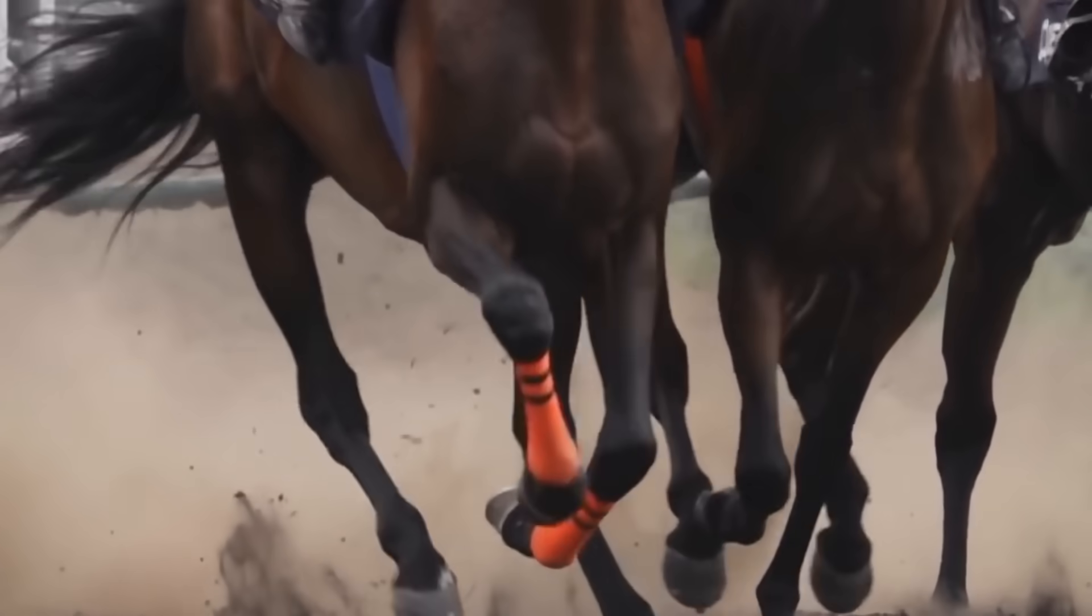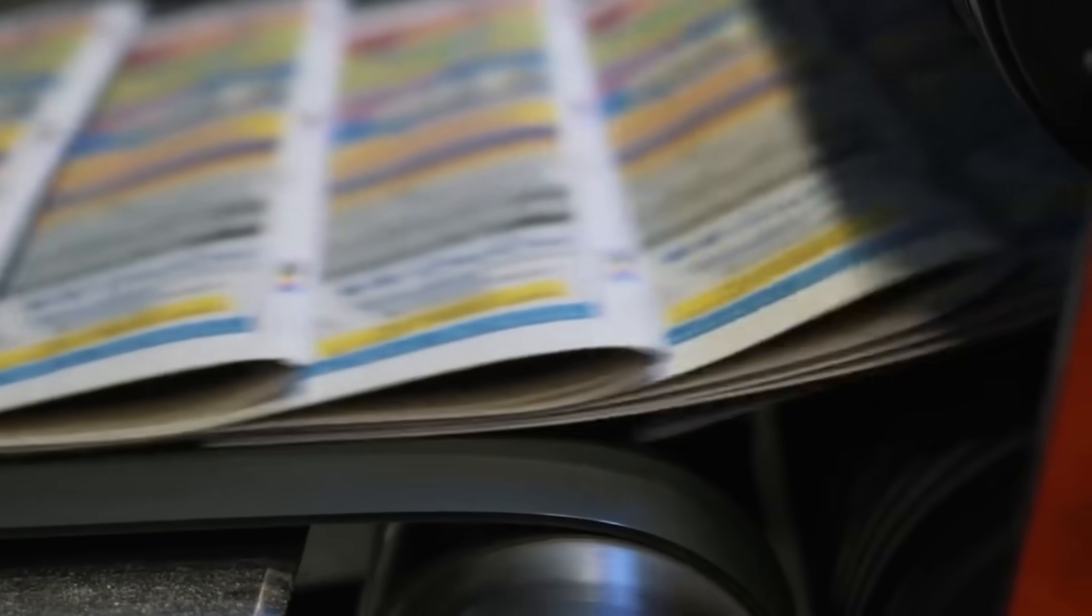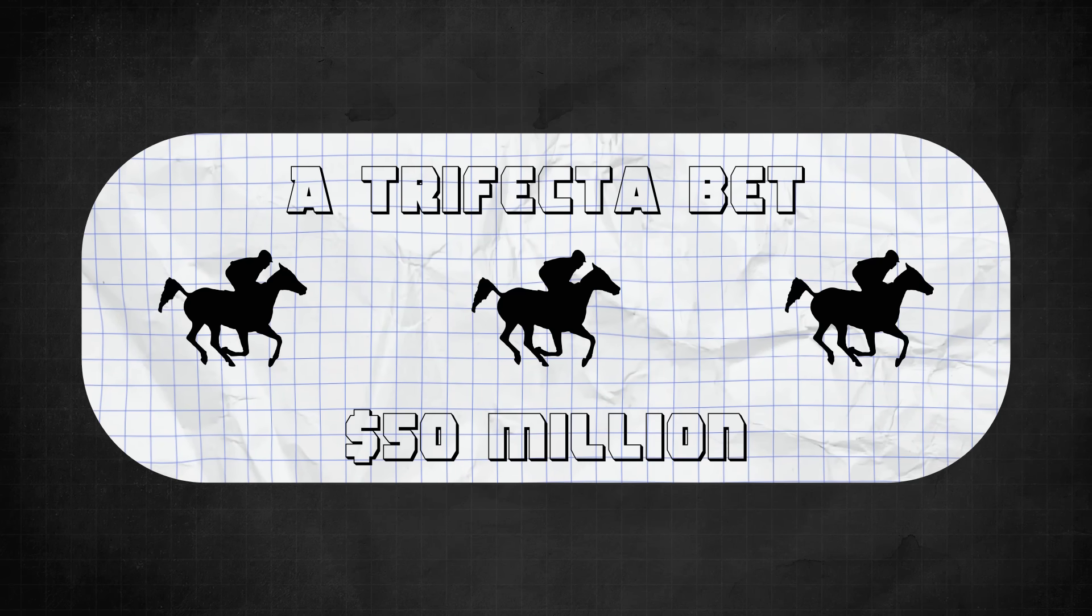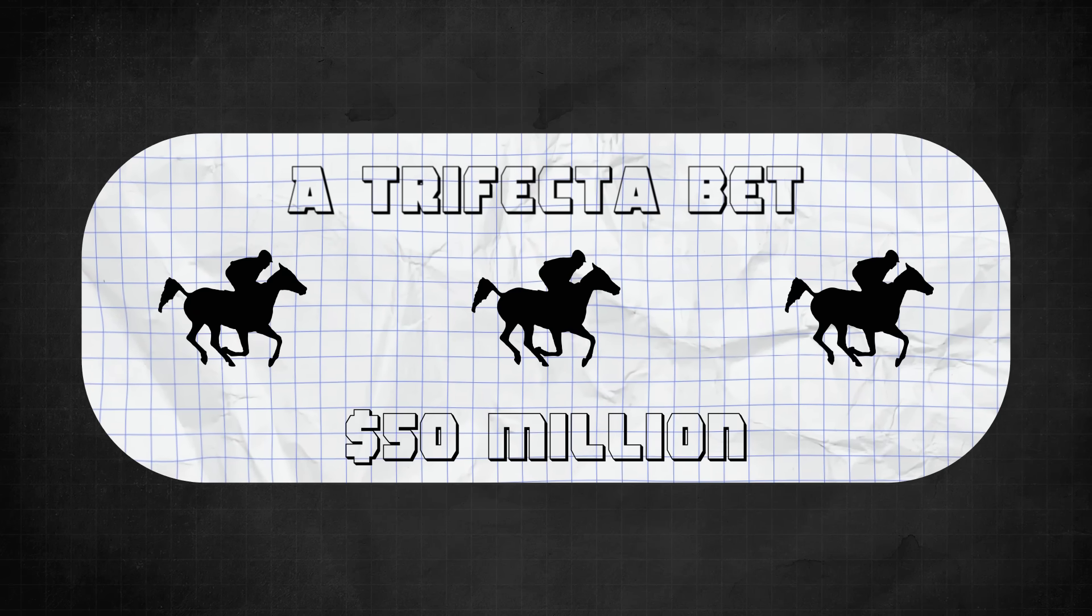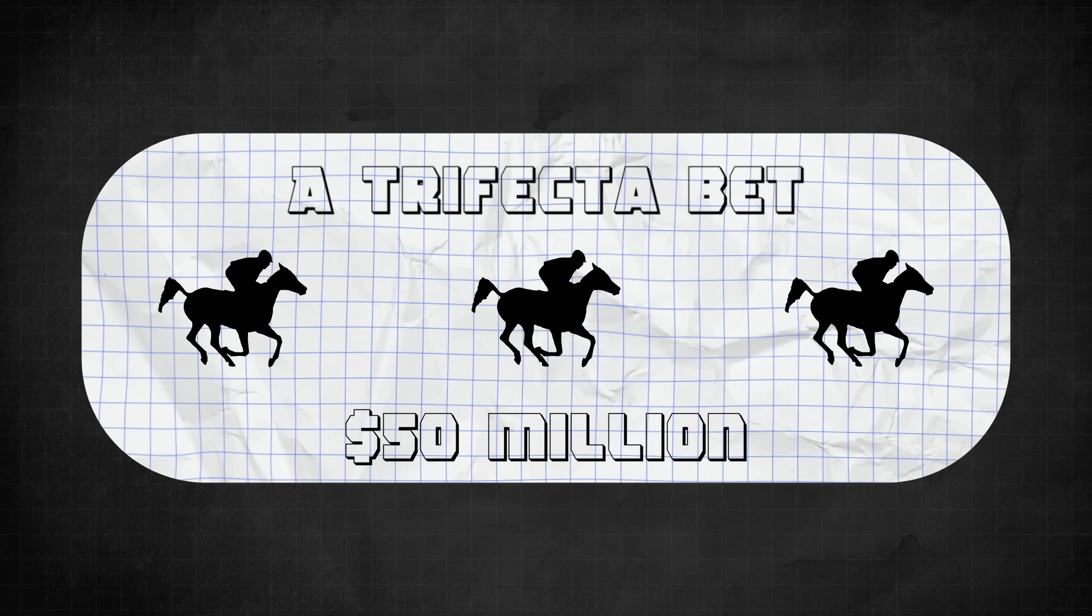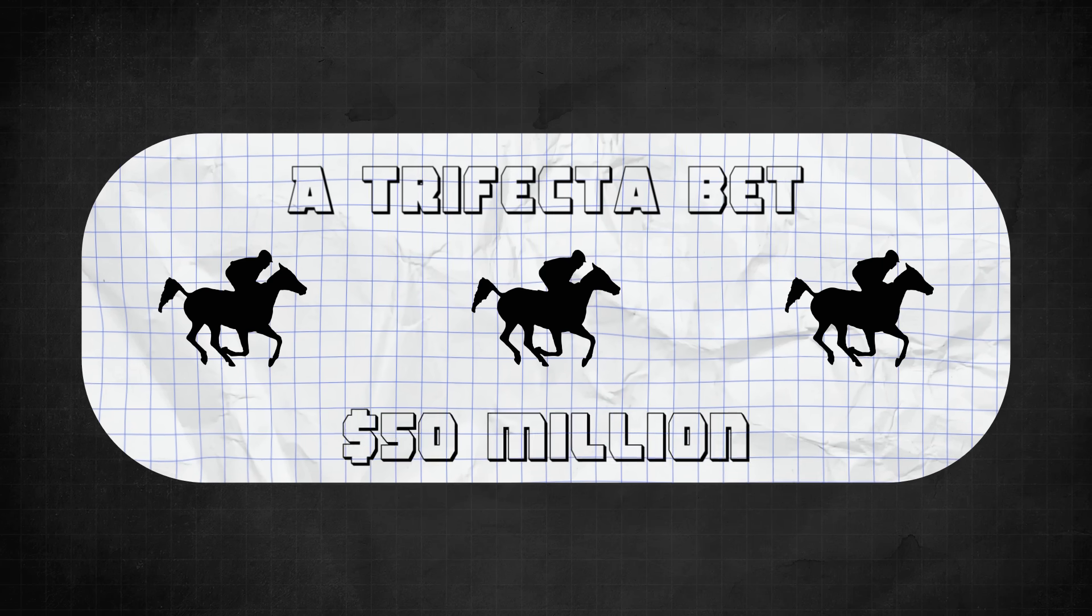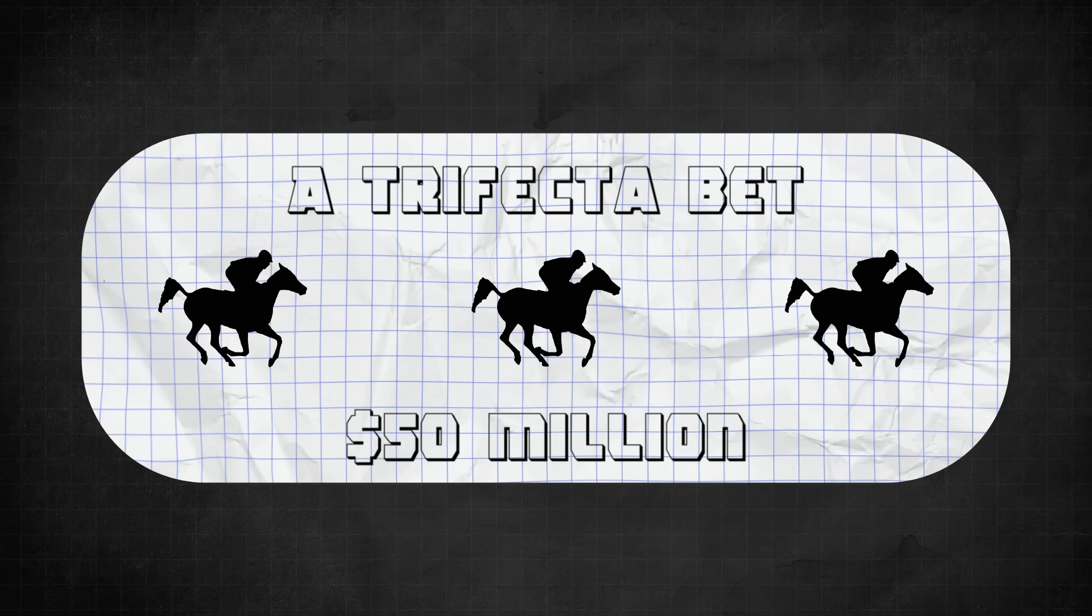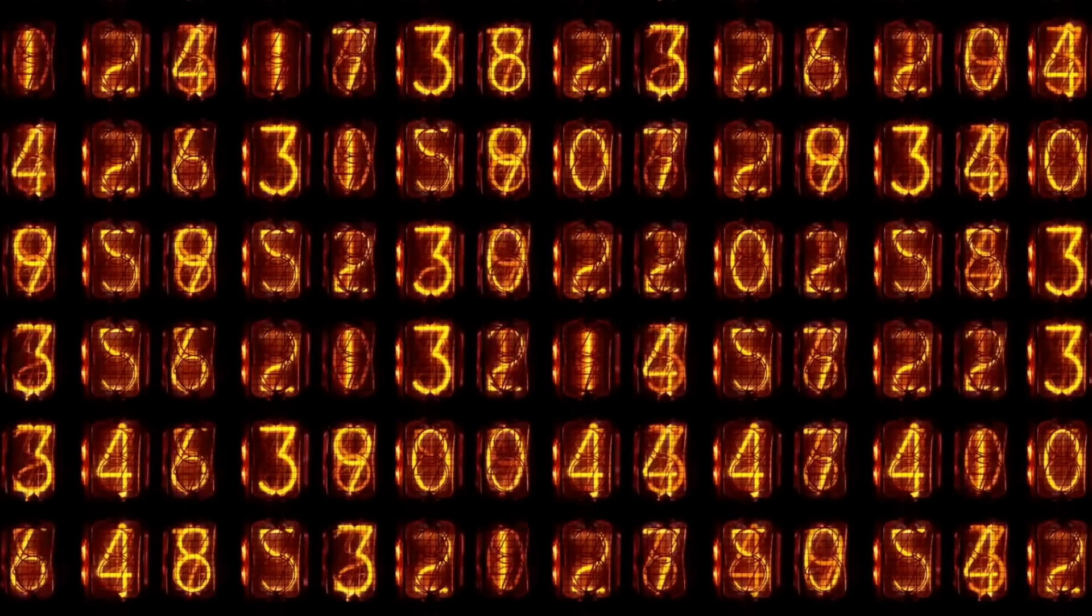The edge, however small, became profit. But there was one type of bet that stood out. The trifecta. It's one of the most difficult wagers in horse racing, predicting the exact order of the top three finishers. The odds of hitting it are extremely low. But so is the amount of money typically wagered on it. And that's what made it exploitable. Because Benter's model wasn't picking trifectas at random. It was identifying combinations that the public consistently underestimated.